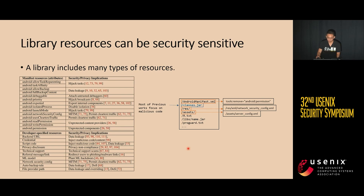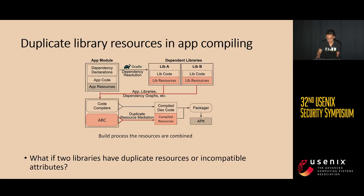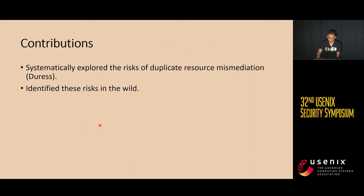Previous studies mostly focused on analyzing the code inside the classes.jar. However, there is an implicit assumption that the resources in the AAR packages are innocent and harmless. Resources in libraries and in apps are managed by the Android Resource Compiler, ARC. A complication during this process is that multiple libraries may have duplicate resources. We raise the question: what will happen if two libraries have resources with duplicate names? In our study, we answered this question and systematically explored the risks of duplicate resources with mismediation.